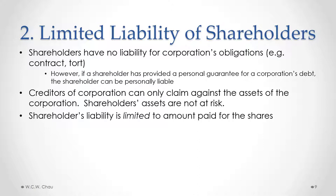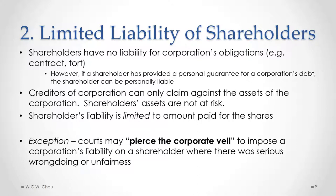A shareholder's liability — the amount of money they can potentially lose — is limited to the amount they paid for their shares. There is an exception to this limited liability: a court may pierce the corporate veil to impose a corporation's liability on a shareholder, making them personally liable for a debt of the corporation. A court will only do this rarely, but where there is serious wrongdoing, unfairness, or particularly fraud where the corporation is used to perpetrate the fraud, a court will ignore the fact that the corporation is a separate legal person and make the shareholder personally liable.